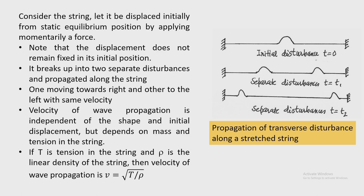The velocity of wave propagation is independent of the shape and initial displacement — that is a very important statement, which will also be proved from the mathematical derivation. The velocity does not depend on whether you displace the string in a sinusoidal or triangular fashion. What is important is that the wave velocity depends on the initial tension and the mass density of the material. The expression is v = √(T/ρ), where T is the tension in the string and ρ is the linear density — mass per unit length. Increasing tension increases velocity, whereas increasing linear density decreases velocity.